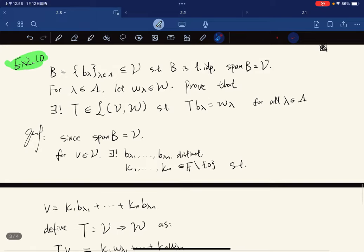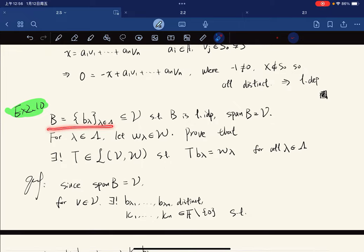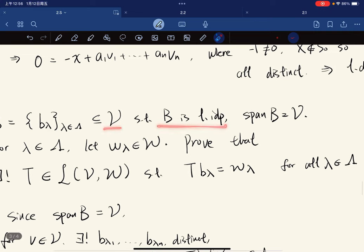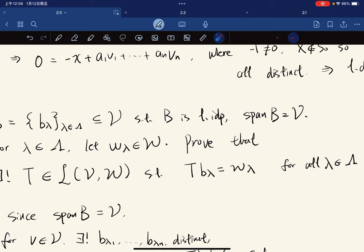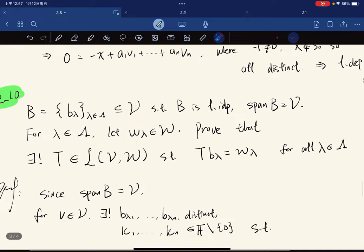One more. B is a collection of vectors such as independent and spans V. So those might know that this is called a basis of V. Then for each element in the index set, we let W_lambda equal belongs to the space. And we want to prove that there exists a unique linear map such that it maps each B_lambda to the corresponding W_lambda for all lambda in the index set.